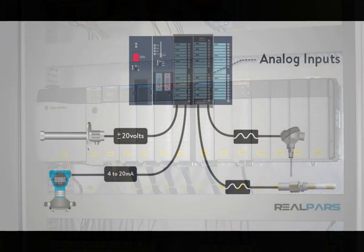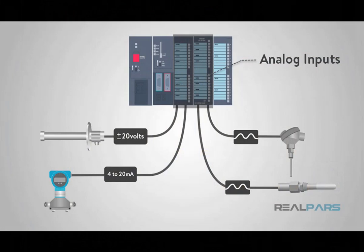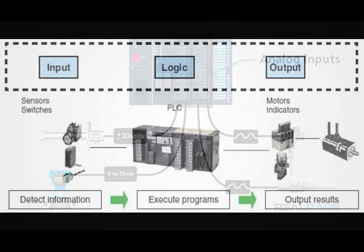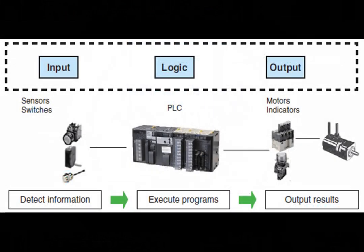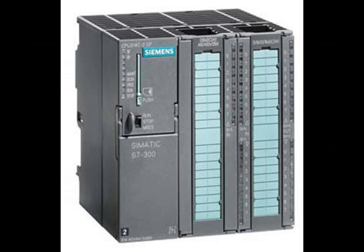PLCs are equipped with digital and analog input and output modules to interface with sensors, actuators, and other devices in the industrial process. Inputs can include signals from sensors like temperature sensors, limit switches, and pressure sensors, while outputs can control devices like motors, valves, and pumps.